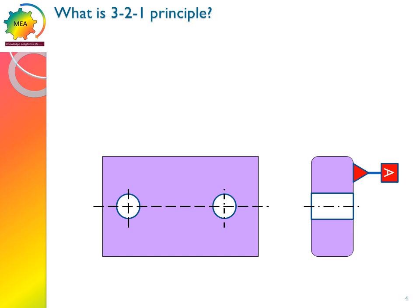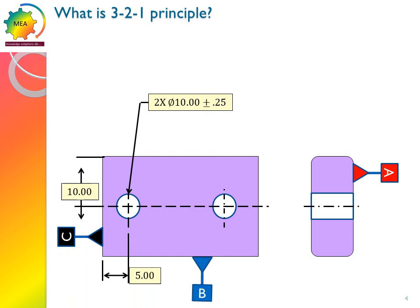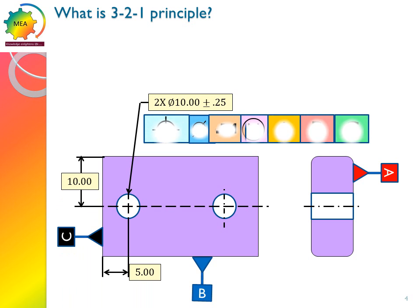Let bottom surface be datum A and surface along the length be datum B, surface along width C. And these two holes are located using position tolerance with respect to A, B, C.